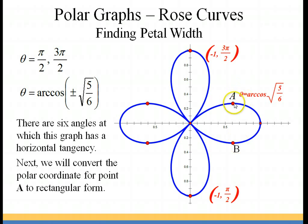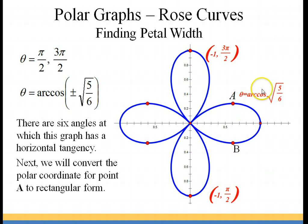The only point we really need to be concerned about is point A. We're going to use that one to find the width of the petal, which is the distance from point A to point B. We can't do that with just an angle measure — we actually need the rectangular coordinates for point A to find the distance from the x-axis to point A.